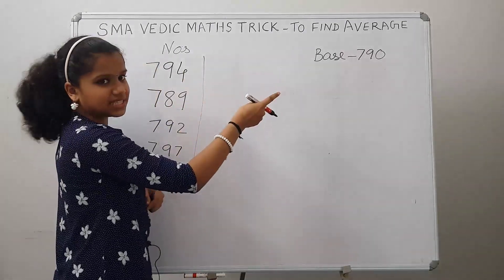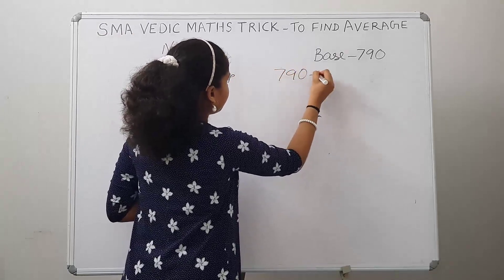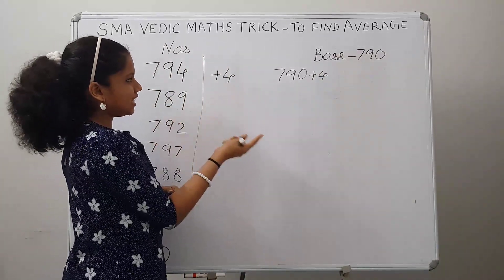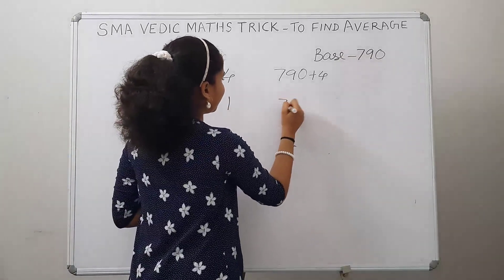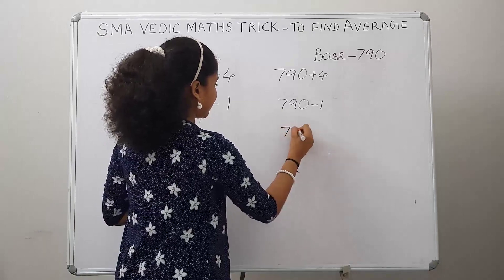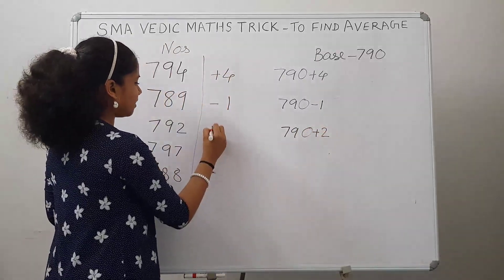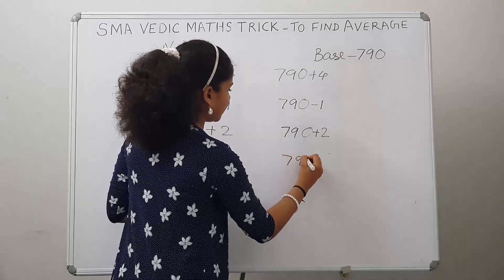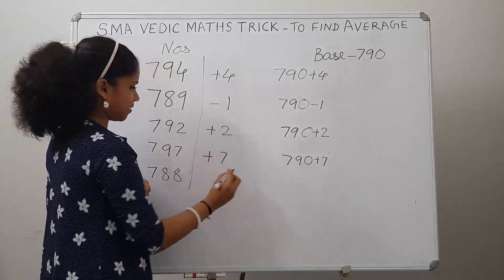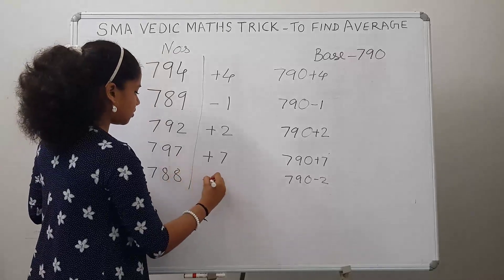794 minus 790 is plus 4, so 790 plus 4 gives us 794. 789 minus 790 is negative 1, so 790 minus 1 gives us 789. 790 plus 2 gives us 792, so write plus 2. 790 plus 7 gives us 797, so write plus 7. 790 minus 2 gives us 788, so write minus 2.